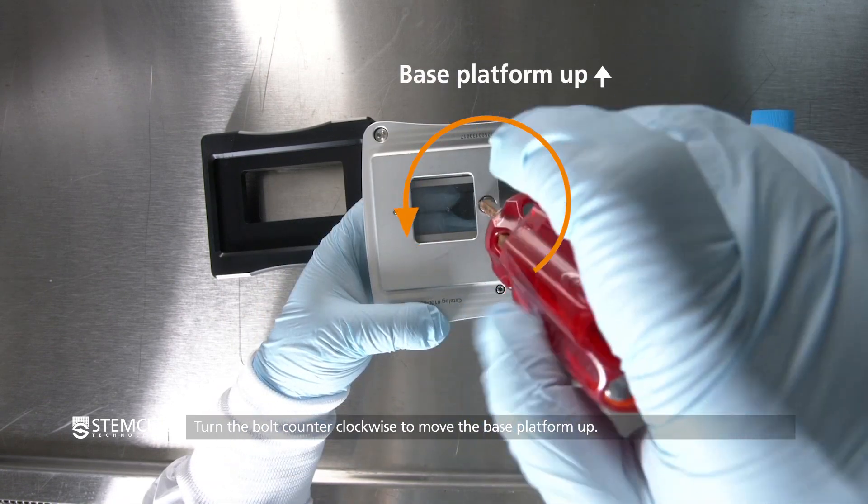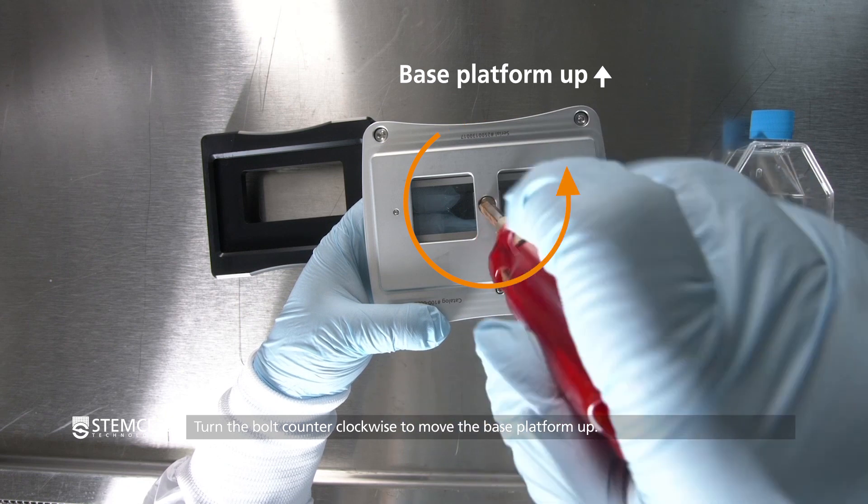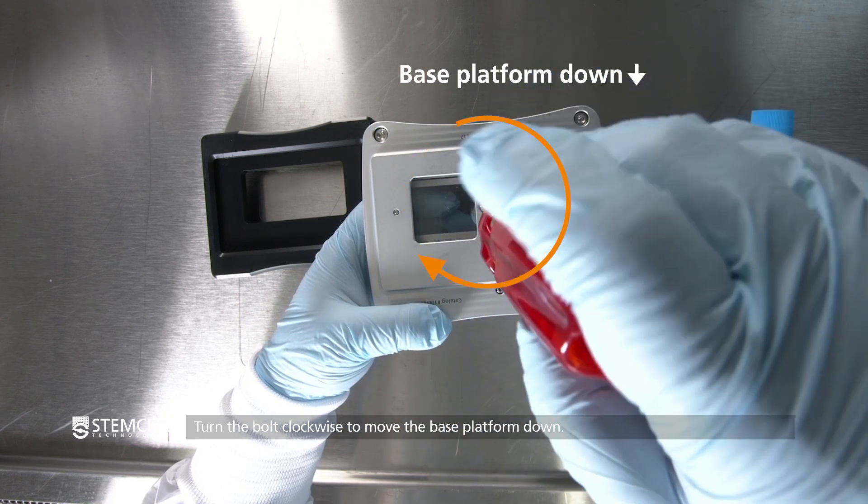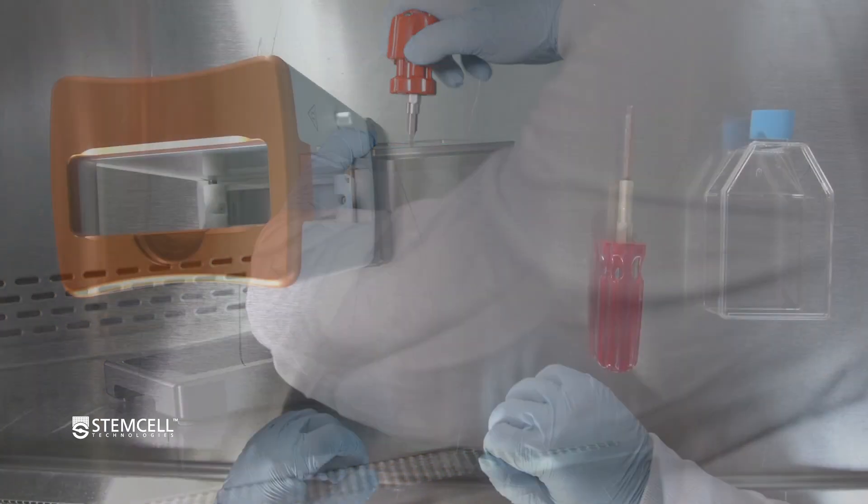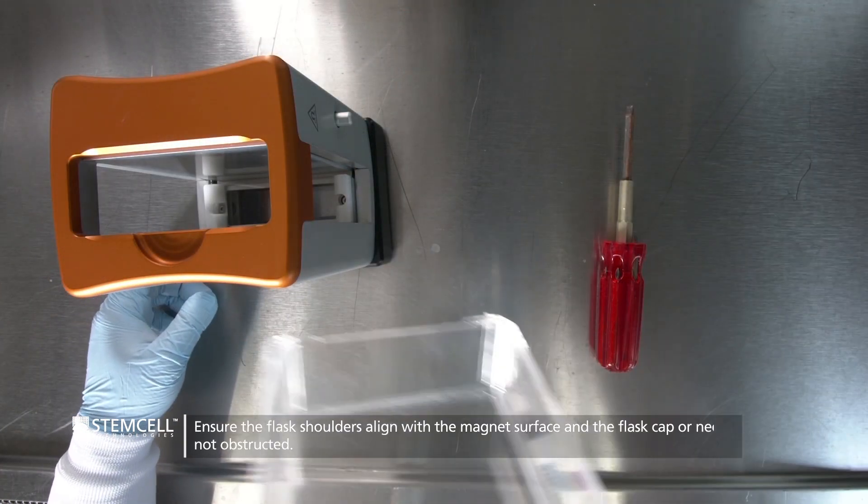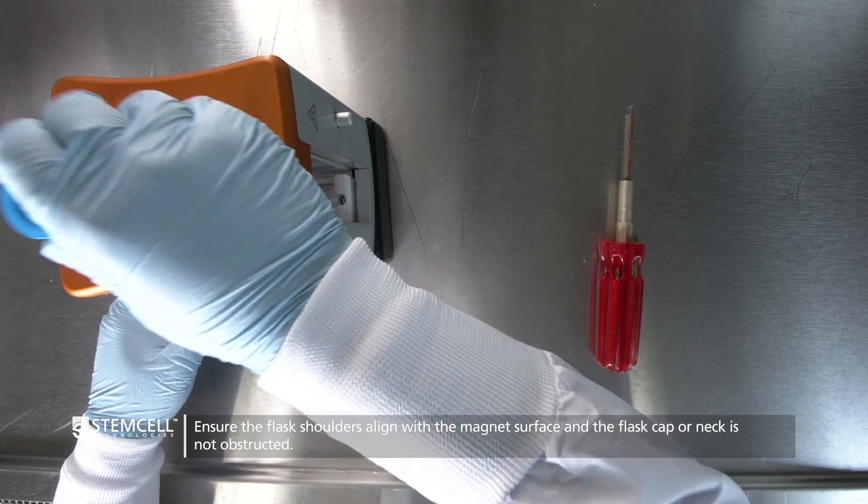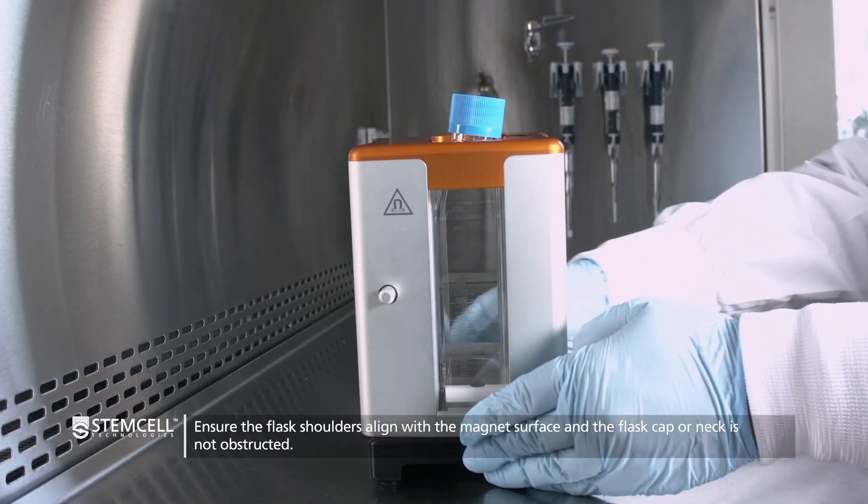Turning the bolt counterclockwise will move the base platform up. Turning the bolt clockwise will bring the base platform down. Adjust the base platform as needed until the flask shoulders align with the magnet surface and the flask cap or neck is not obstructed.